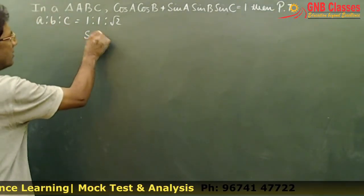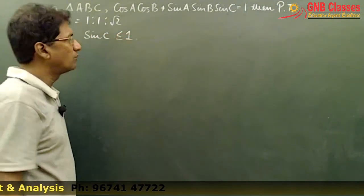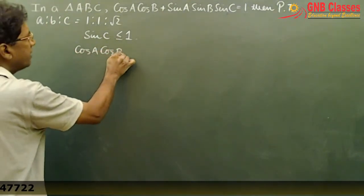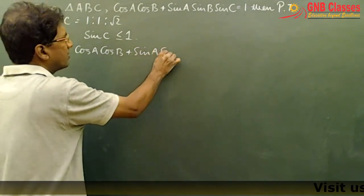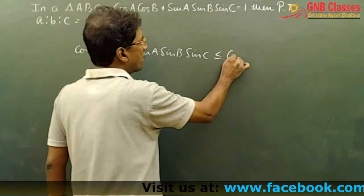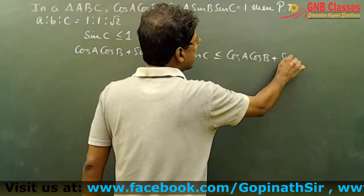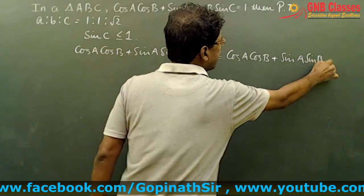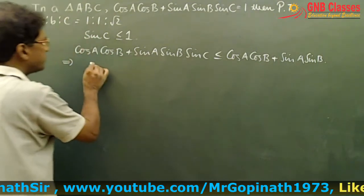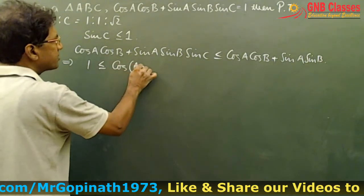Since sinC is always less than or equal to 1, we can say that cosA·cosB + sinA·sinB·sinC ≤ cosA·cosB + sinA·sinB. The value of this expression is 1, so this is less than or equal to cos(A-B).